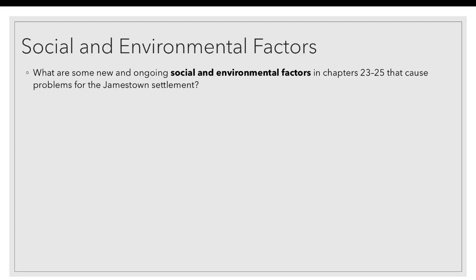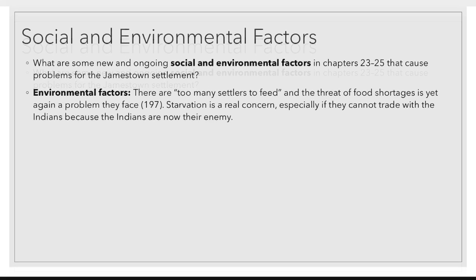Let's review. What are some new and ongoing social and environmental factors in chapters 23 through 25 that are causing problems for the Jamestown settlement? Starting with environmental, since there are much fewer environmental factors than social factors: there are too many settlers to feed, and the threat of a food shortage is yet again a problem. Starvation is a real concern, especially since they haven't been able to trade with the Native Americans, who are now their enemy.